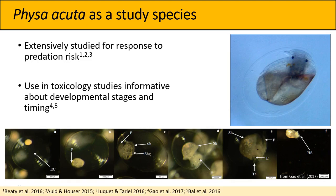I'll be using Physa acuta for this study for a couple of reasons. They've been very extensively studied for all sorts of responses to predation risk, which was very useful when designing this study and coming up with predictions. There is also a portion of this study focused on trying to quantify and compare offspring development, and Physa acuta has been used extensively in toxicology studies, providing a lot of information regarding developmental stages and timing, as shown in the photos from a study by Gao et al.